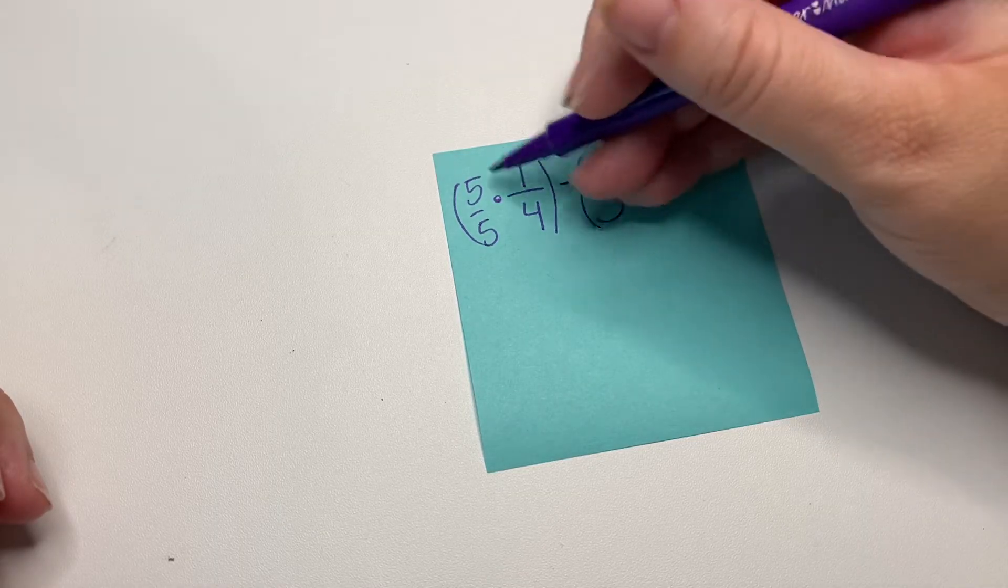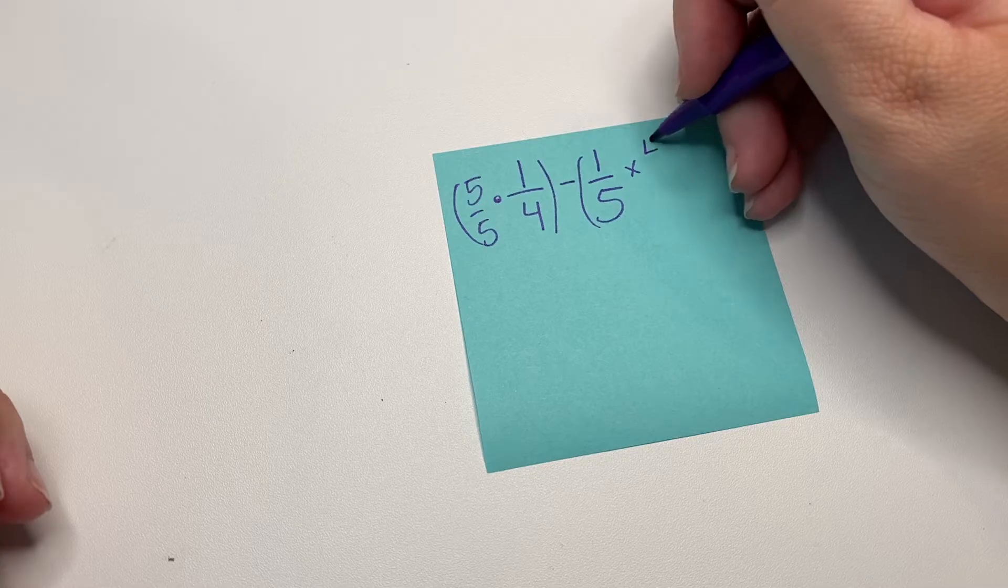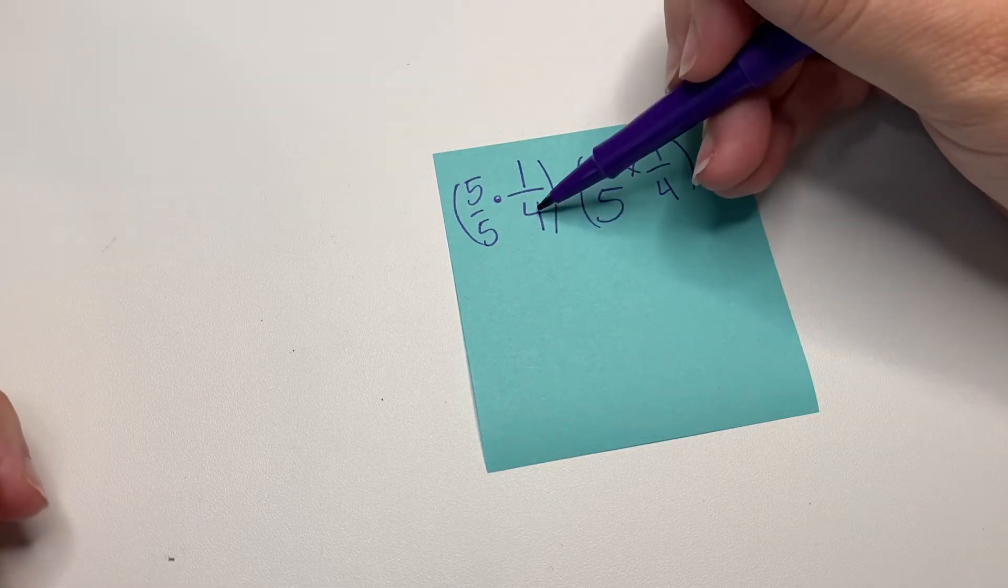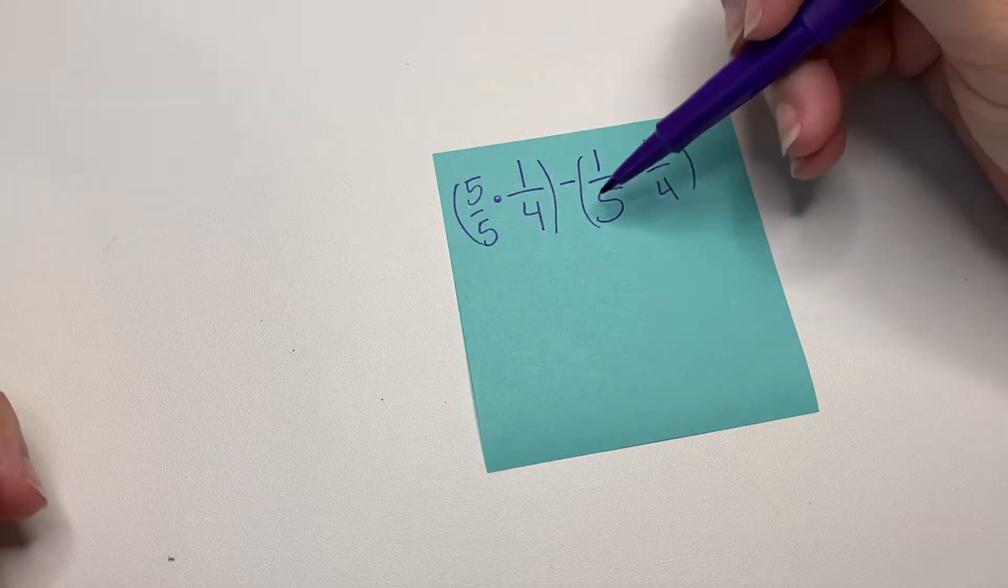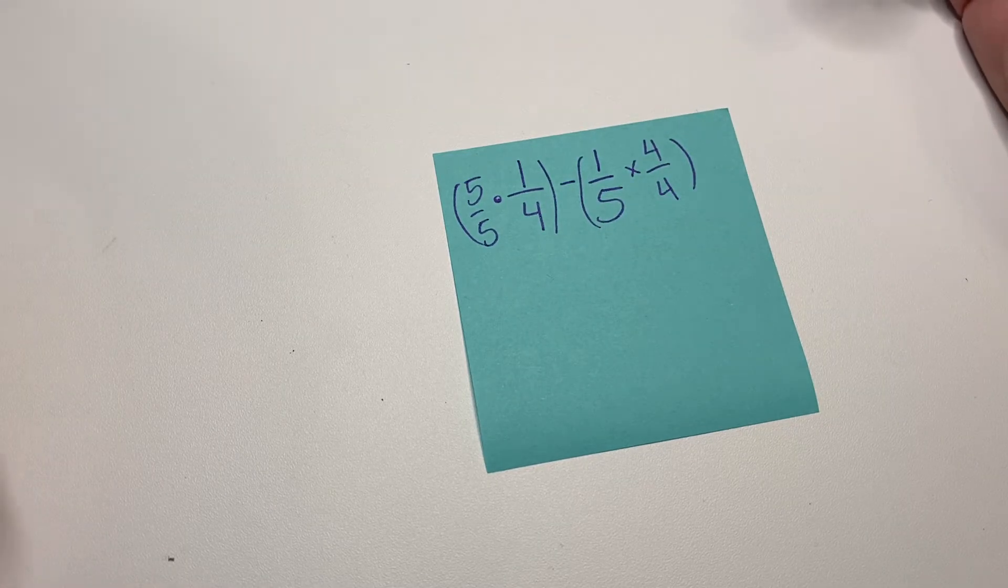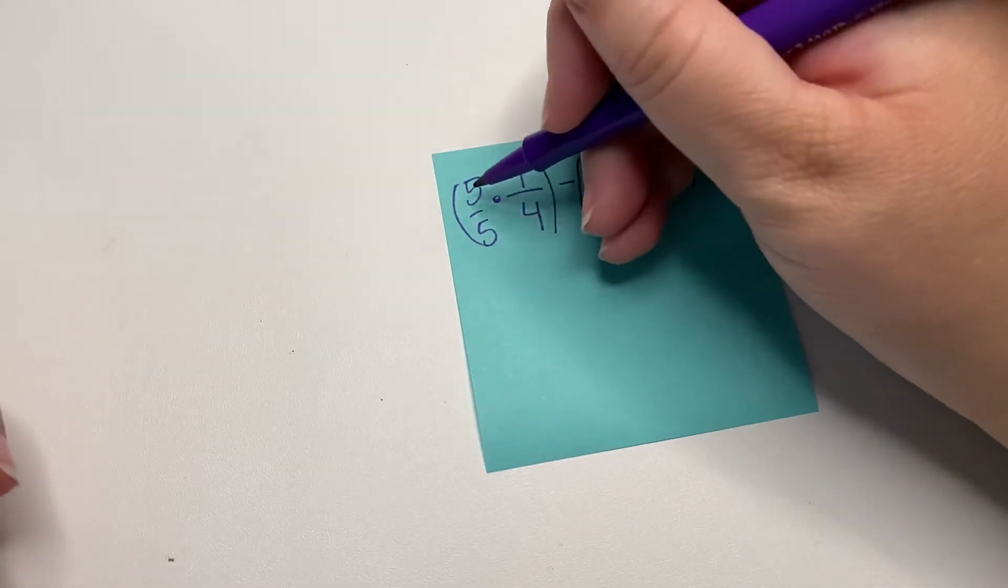And so we used this five, right? Five over five over here. And if we multiply this side by the denominator over here, we're also going to get 20. If we do that, we'll get the same number on both sides, which is really what we're trying to do here. So let's try it.